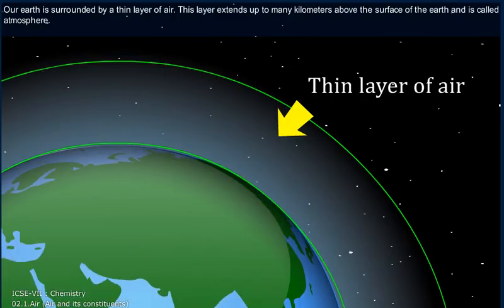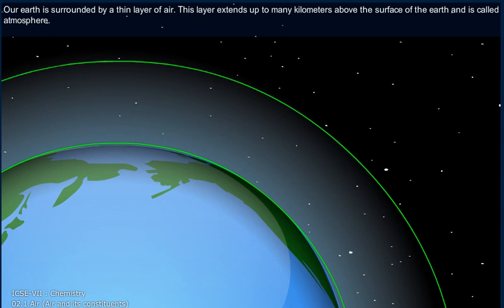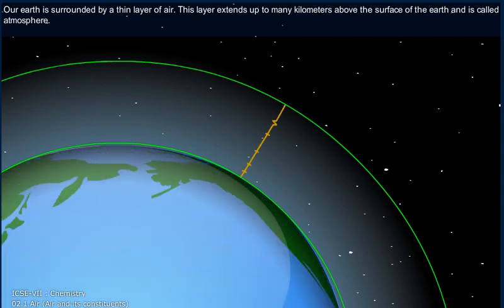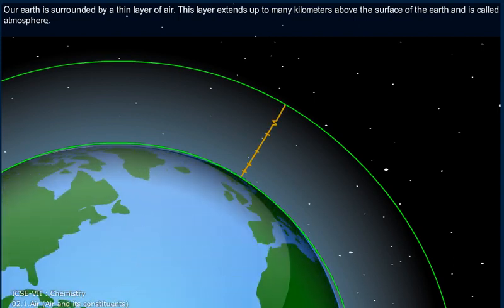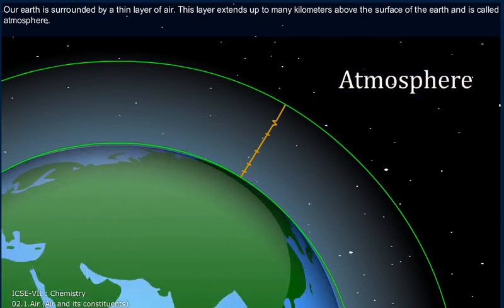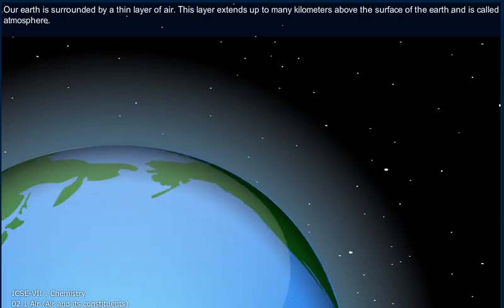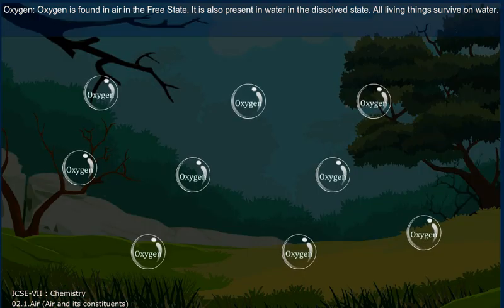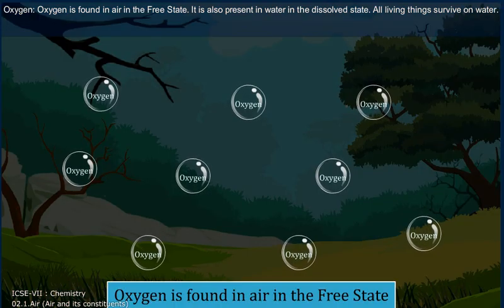Our earth is surrounded by a thin layer of air. This layer extends up to many kilometers above the surface of the earth and it is called atmosphere. Oxygen is found in air in the free state.